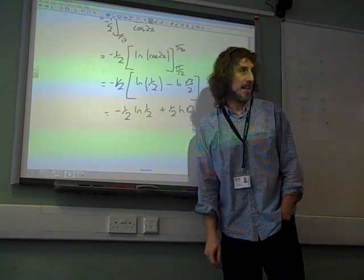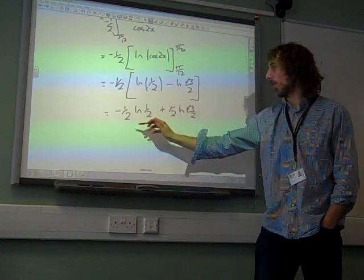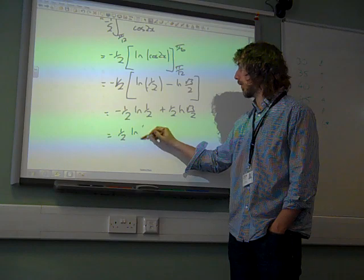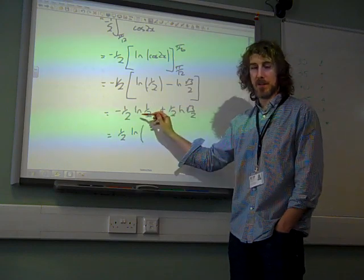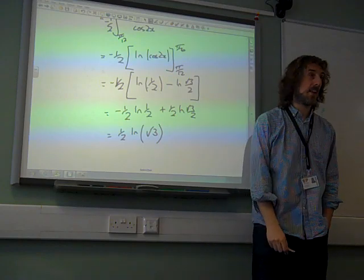It did say in the form a ln b. So this is that one take away that one. So it's half natural log of that one. If you divide it by that, you end up with root 3. And that will do as an answer.